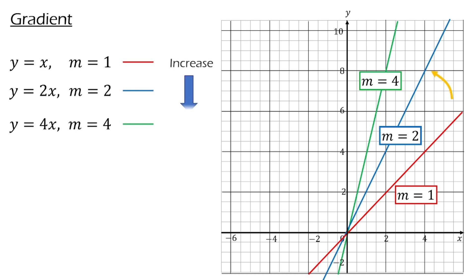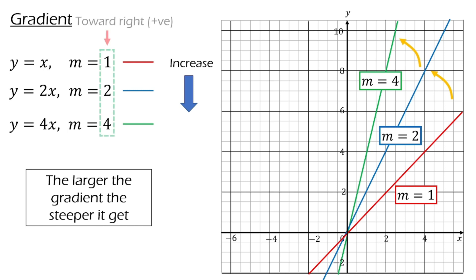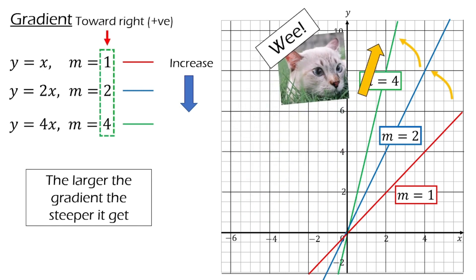As you can see, increasing the value of m, the line gets steeper and steeper. Besides, if you notice, line with positive gradient leans towards the right.